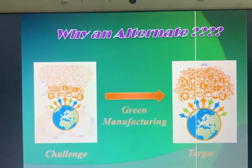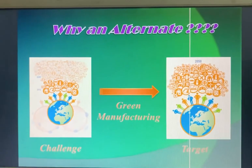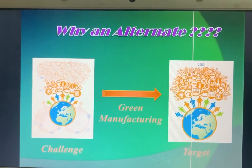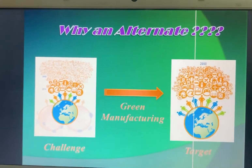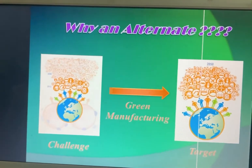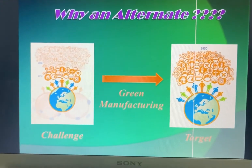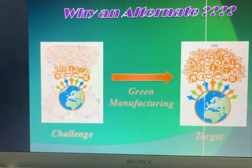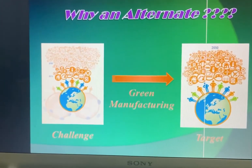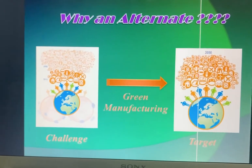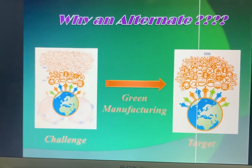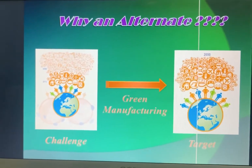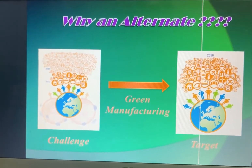The very first diagram shows what an alternate process is and why there is a need for it. There are two diagrams: the first figure shows the challenge, and the second figure shows the target. By applying all these green manufacturing principles, we can convert the challenge into the target.